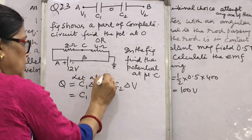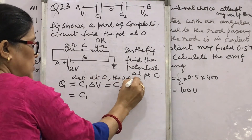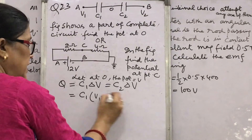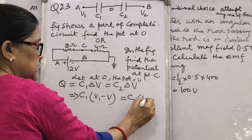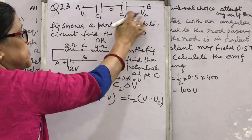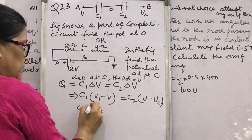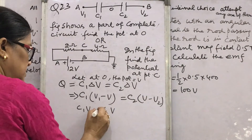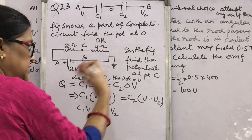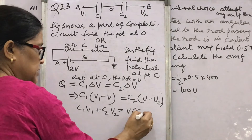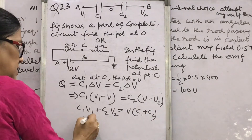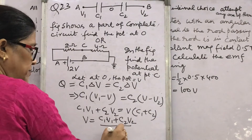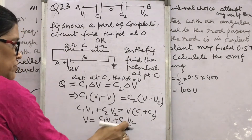Setting the charges equal: C1(V1 − V) = C2(V − V2). Expanding: C1·V1 − C1·V = C2·V − C2·V2. Rearranging: C1·V1 + C2·V2 = V(C1 + C2). This gives V = (C1·V1 + C2·V2) / (C1 + C2) — this is the expression for common potential, the same result you have read in the topic on capacitors.